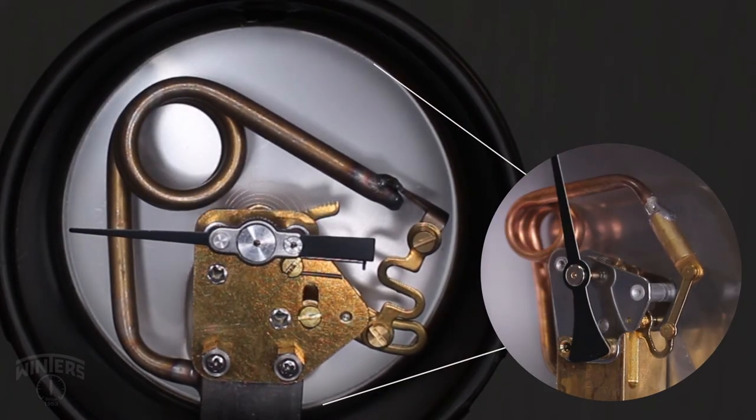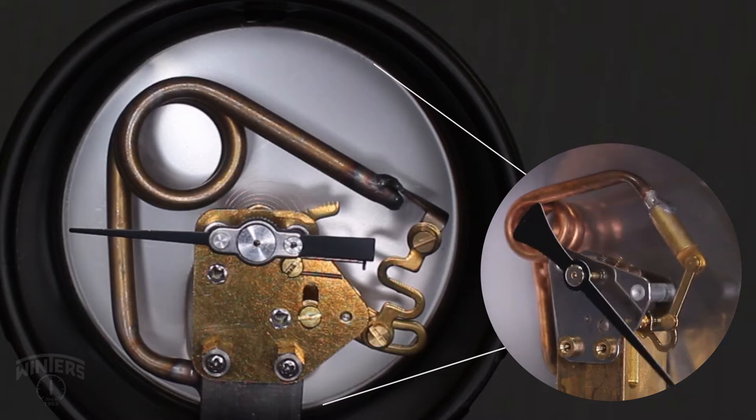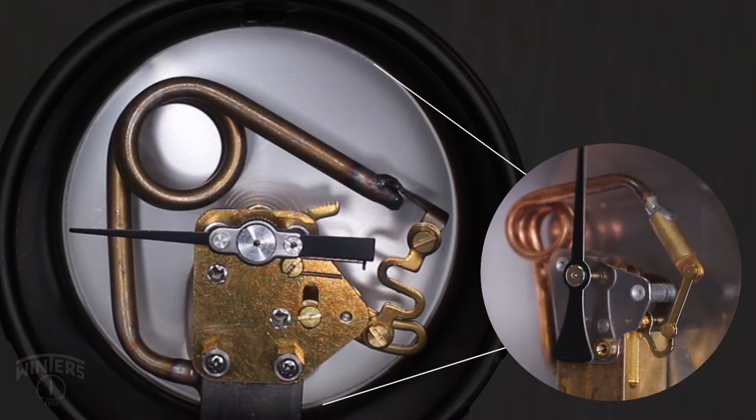Winters Bourdon tubes are seamless, which means there are only two weld points throughout the wetted parts: where the tube contacts the socket and at the end of the tube, which provides a seal.